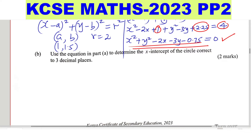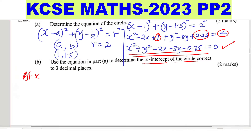Part B: Use the equation from Part A to determine the x-intercepts of the circle, correct to three decimal places. To find the x-intercept, at the x-intercept y is equal to 0. So you take the equation obtained and substitute y with 0.